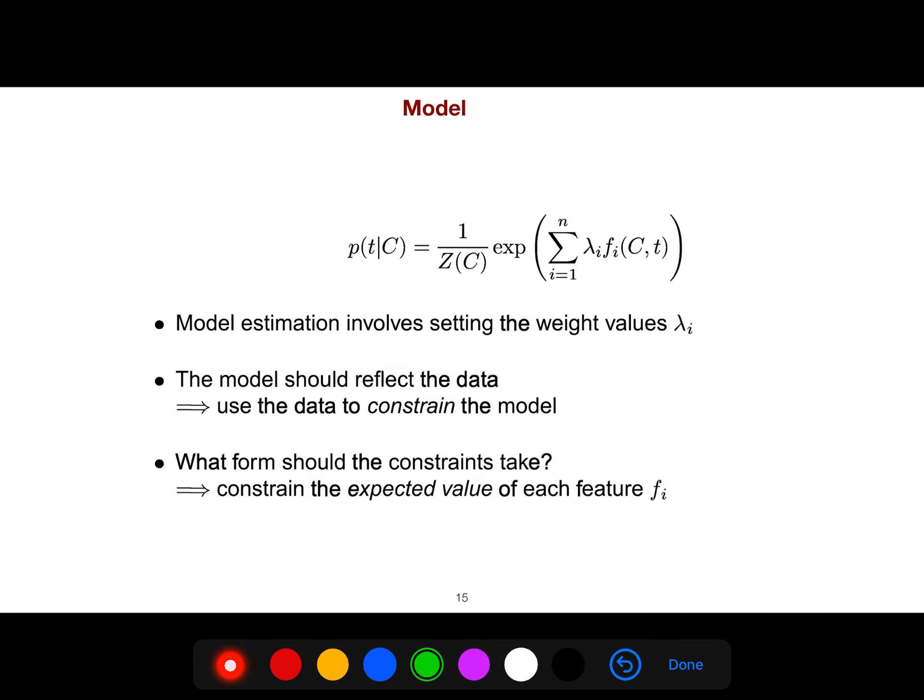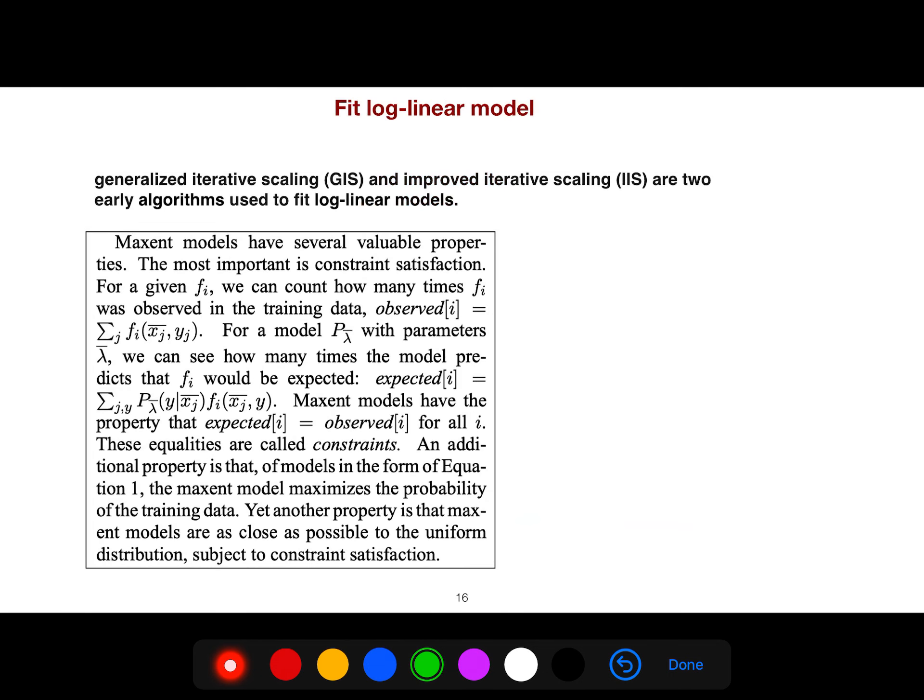What is the model? Model estimation involves setting the weights values, lambda_i. The model should reflect the data. We use the data to constrain the model. What form should the constraints take? Constrain the expected value of each feature. So when we want to fit the log-linear model, we want to generalize iterative scaling and improved iterative scaling are two early algorithms. So we have two algorithms to fit that log-linear model.